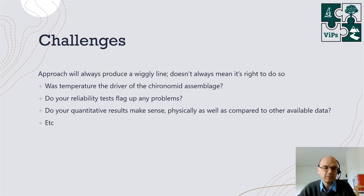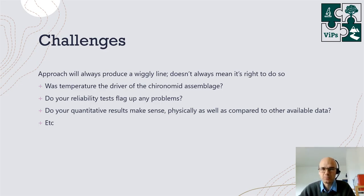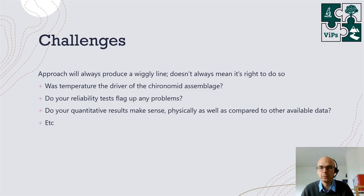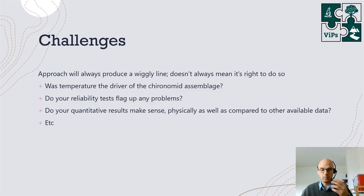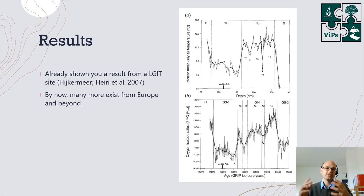Now there are certain challenges involved in this approach. The method will always produce a wiggly line, but it doesn't necessarily always produce one that's robust, reliable, or even realistic. Questions you always need to ask include: was temperature really the driver of the makeup of my chironomid fauna through time? If you do additional statistical tests, do they flag up any problems? Do your quantitative results make sense when compared to other data or even just on the basis of their numbers — are they realistic? Those are the kinds of critical questions you have to ask yourself even after completing your first set of tests.